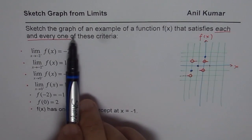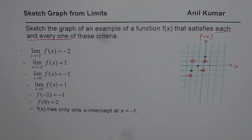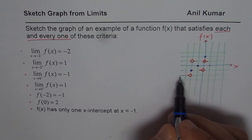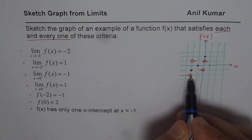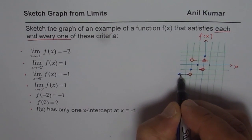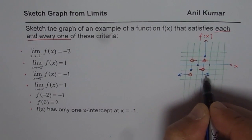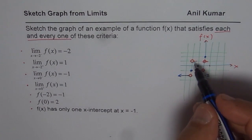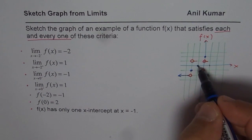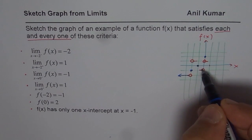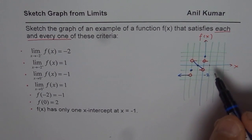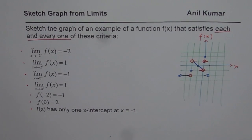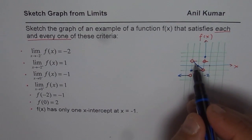Now we need to sketch a graph that connects all these points and satisfies all conditions. Starting from the leftmost part: when approaching x = -2 from the left, the limit is -2, so I draw a horizontal line coming in from the left toward that open hole. From the right side of x = -2, the limit is +1, and we need to connect through the x-intercept at x = -1. The best way is to draw a straight line going from +1 down through x = -1, crossing the x-axis there.